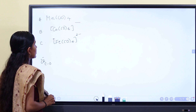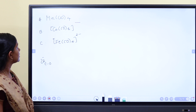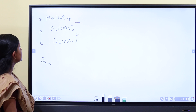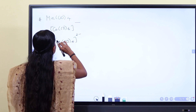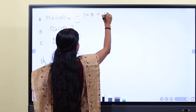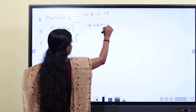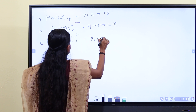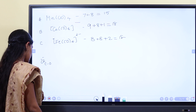Now we need to check if these are isoelectronic. Manganese has 7 + 8 = 15 electrons; 9 + 8 + 1 = 18; 8 + 8 + 2 = 18. These are isoelectronic species with 18-electron counts.